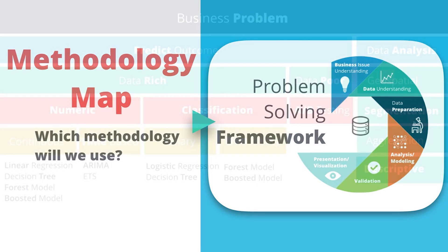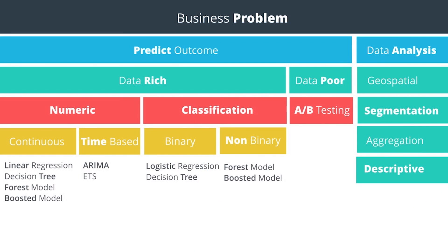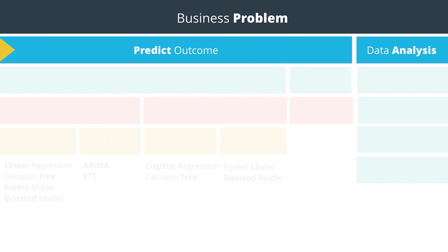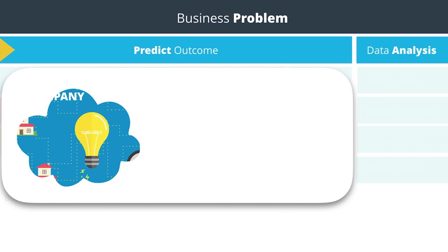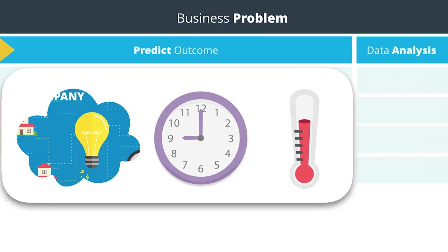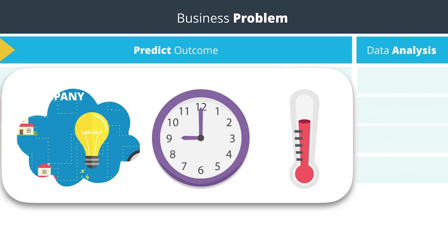Let's start at the top of the flowchart. The first step is to determine if the business problem involves predicting an outcome or not. Having a solid understanding of the business issue and data will help us easily answer this question. Earlier, we discussed a scenario where we needed to predict electricity supply capacity. After working through the business issue, we decided that we also need to predict the temperature of each hour of the day as well. For this scenario, we'd go down the path to the left.